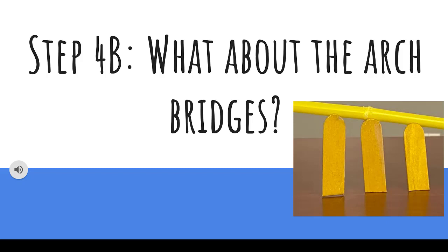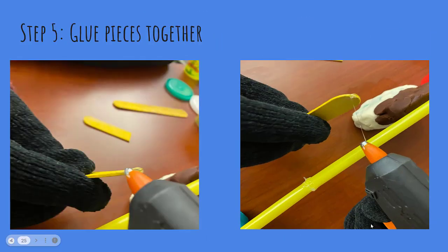With a ruler, measure the popsicle sticks and make sure each half is smaller than the other. In order to cut the popsicle sticks, I would recommend using scissors instead of just breaking them in half — it creates a cleaner cut. Then, hot glue the bottom of the boba straws to the rounded part of the cut popsicle sticks.